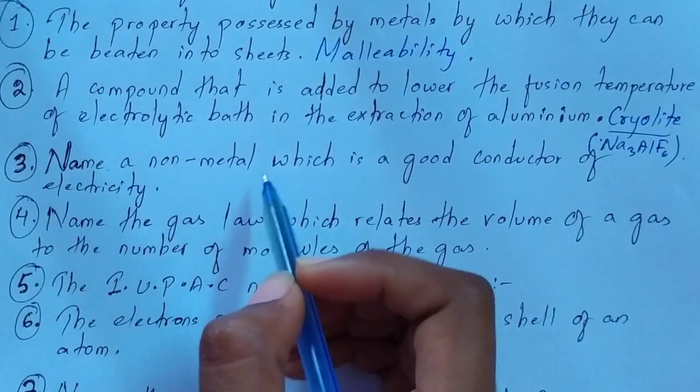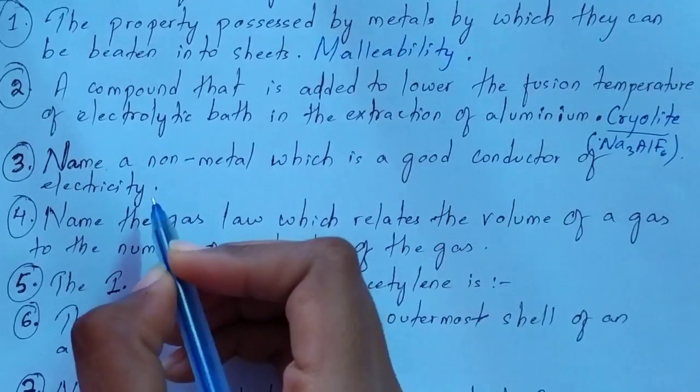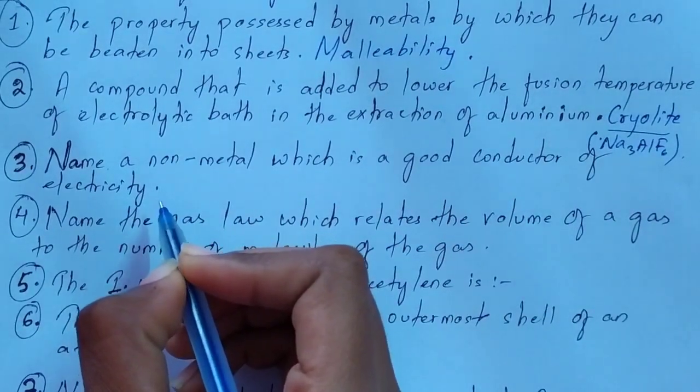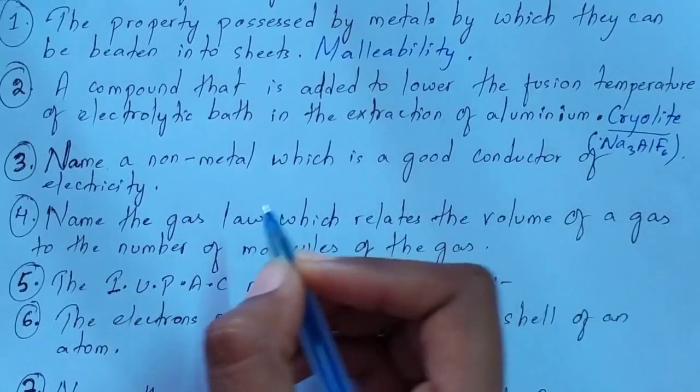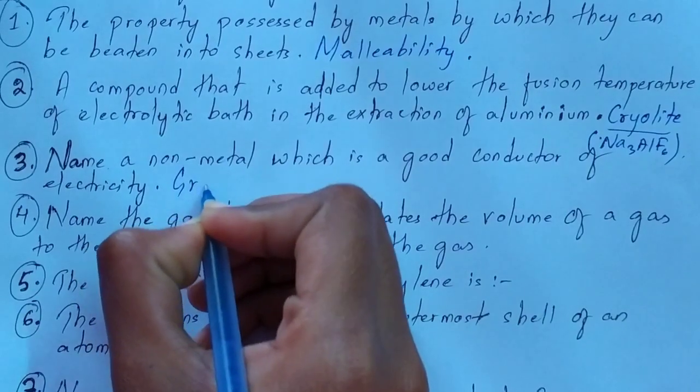Question number 3: name a non-metal which is a good conductor of electricity. A non-metal that is a good conductor of electricity is graphite.